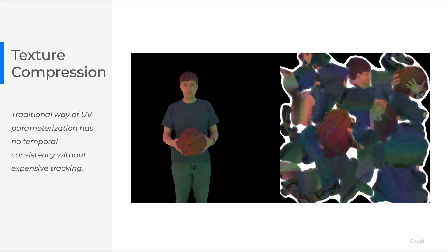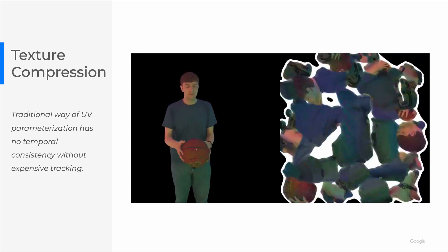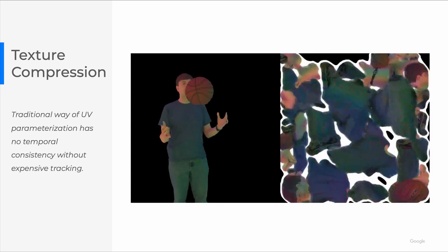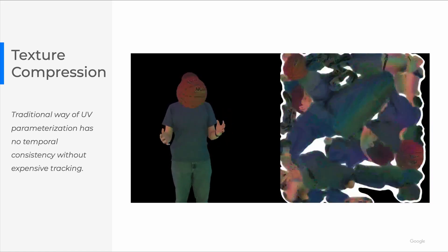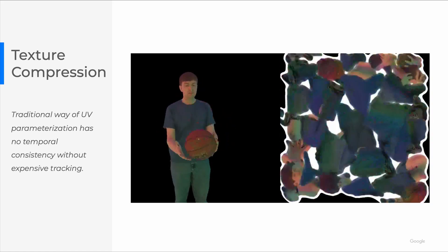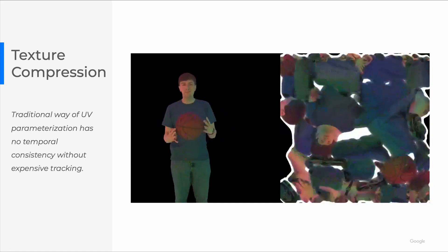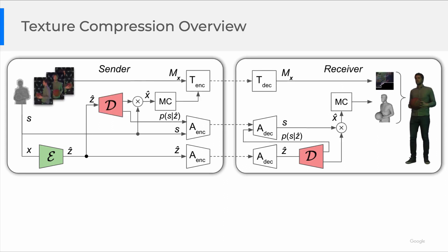As to texture compression, an intuitive way is to convert the volumes to meshes with marching cubes, generate UV parameterization, and then compress the UV maps with a modern video compressor. However, as you can see in this video, there is no temporal consistency without expensive tracking, and this is not friendly for typical video encoders. To address this issue, we then design a novel but simple texture parameterization method, which naturally combines with our geometry compression pipeline.